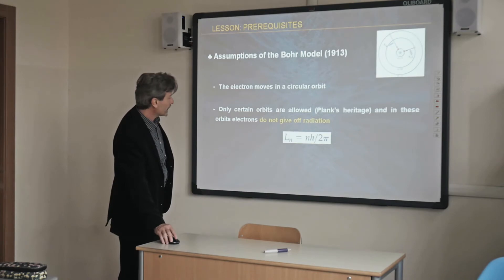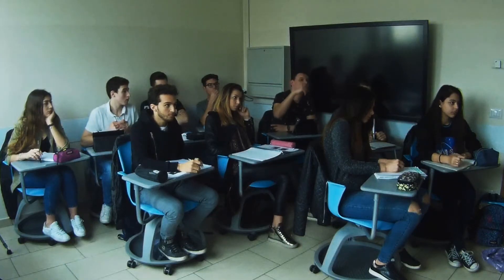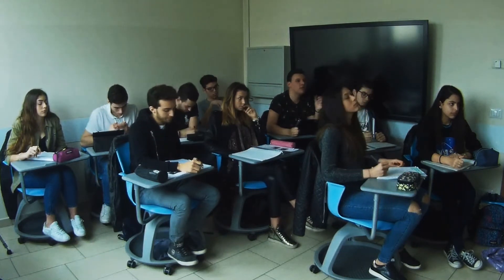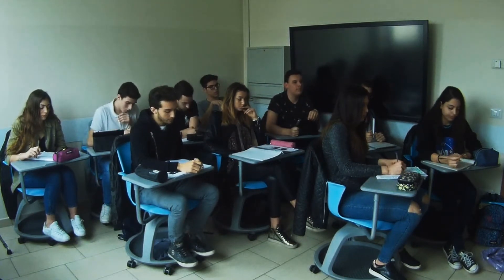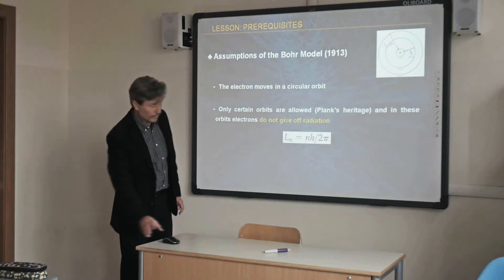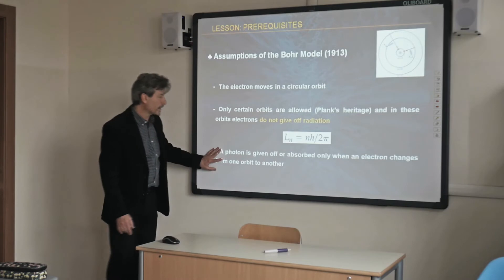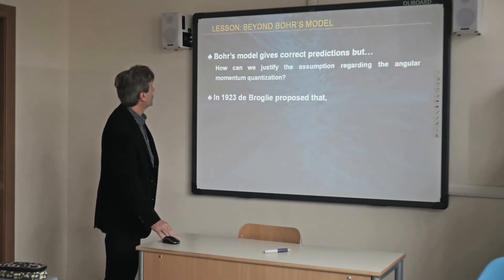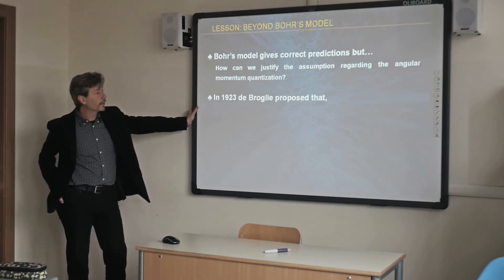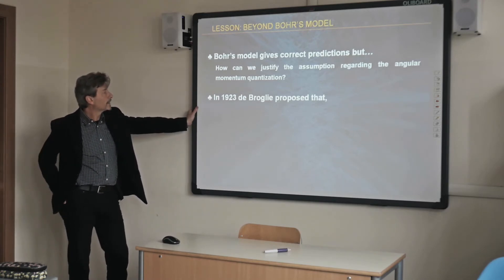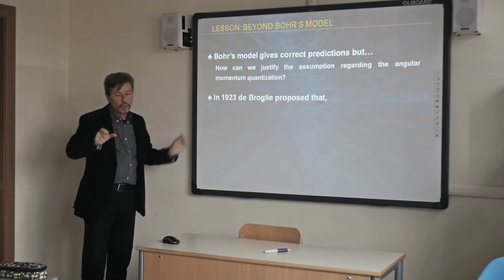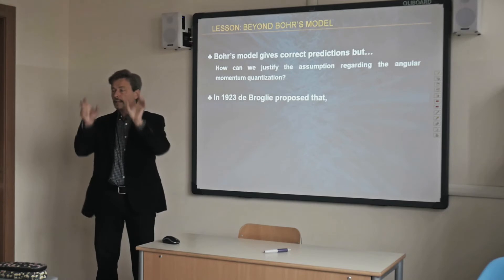We also have another assumption. When an electron changes orbit, it gives off or absorbs photons. Bohr's model gives correct predictions — it was a great idea — but he was not able to justify, from a physical point of view, the reason why we choose particular quantized orbits. So how can we justify the assumption regarding angular momentum quantization?